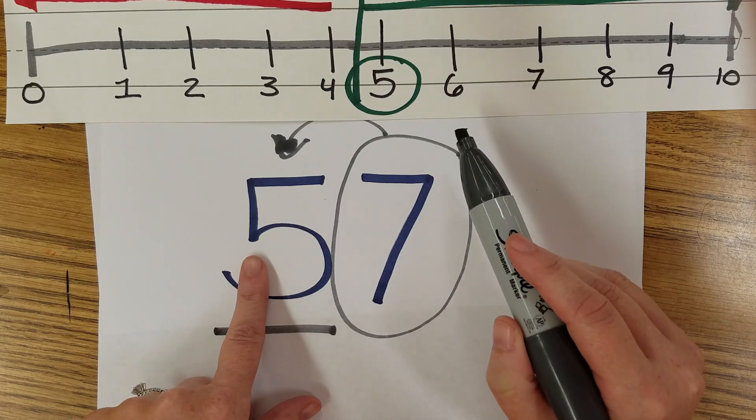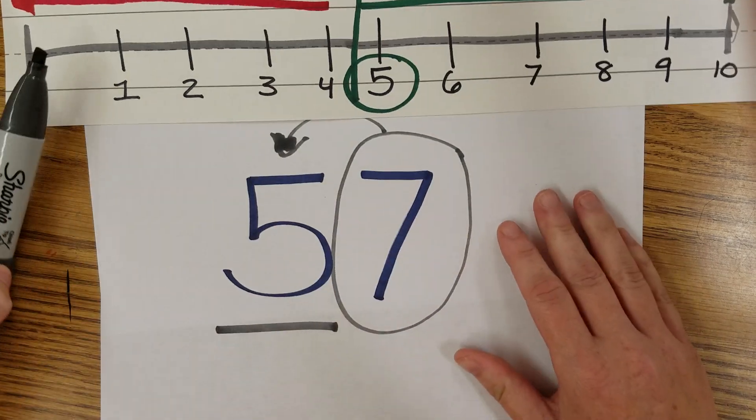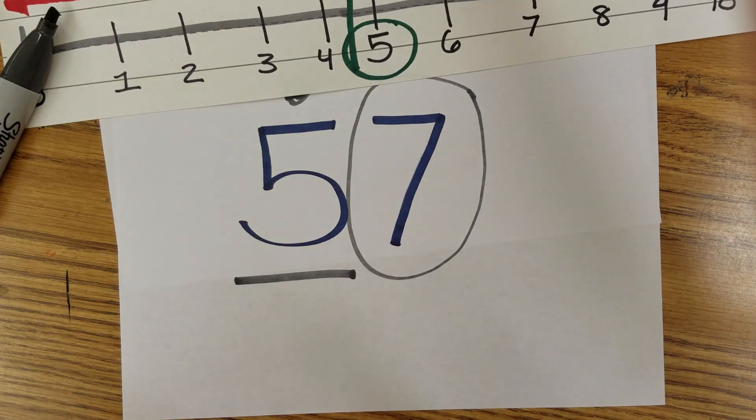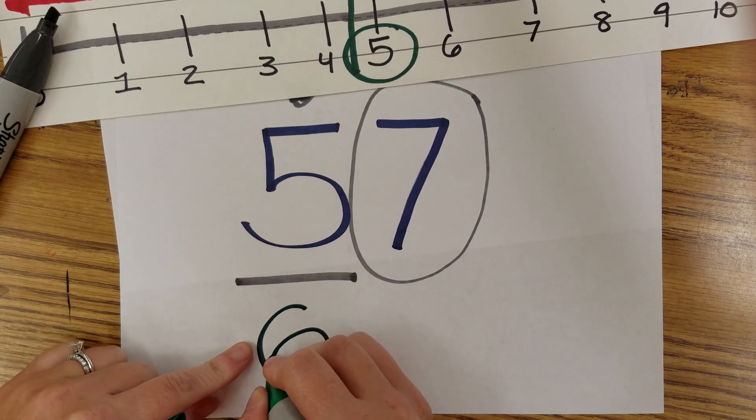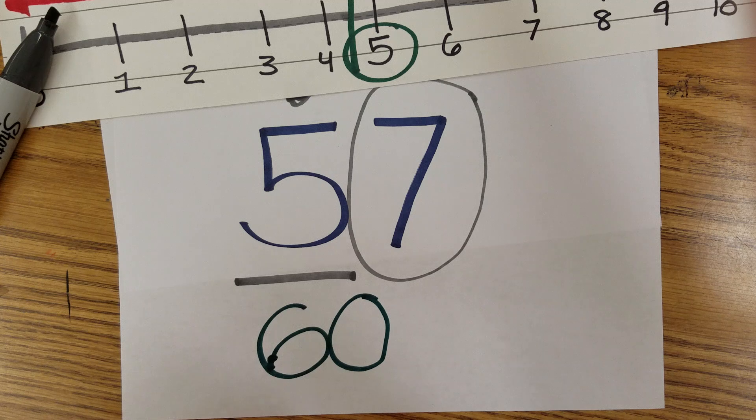it's going to tell the five to go up to the next ten, to add one ten. So that gave it the green light. Fifty-seven. This goes up to six, it's going to be closer to sixty.